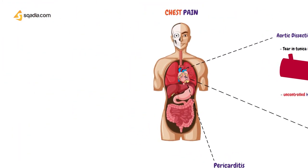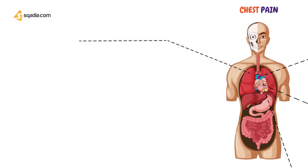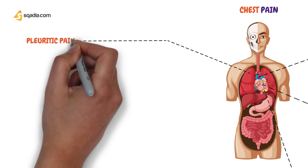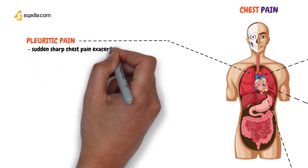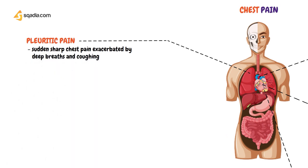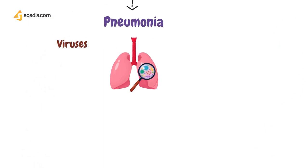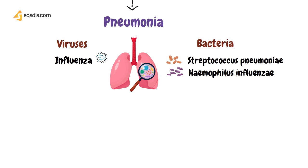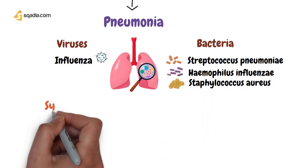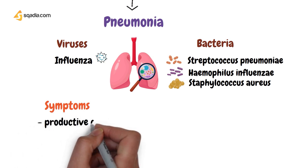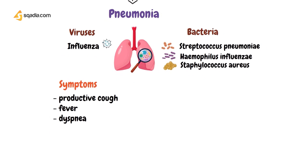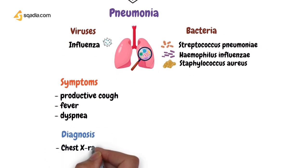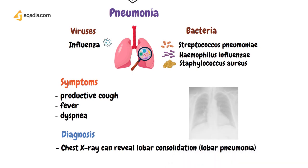Now moving on to non-cardiac causes, the first being pleurisy or pleuritic pain — best described as a sharp chest pain made worse by deep breaths or coughing. The most common disease associated with pleuritic pain is pneumonia, a chest infection caused by viruses such as influenza or various bacteria, including Streptococcus pneumoniae, Haemophilus influenzae, and Staphylococcus aureus. Patients with pneumonia will also present with a productive cough, fever, and difficulty breathing. Initial diagnosis can be made on a chest X-ray, which may reveal a consolidated lobe or patchy areas of consolidation.